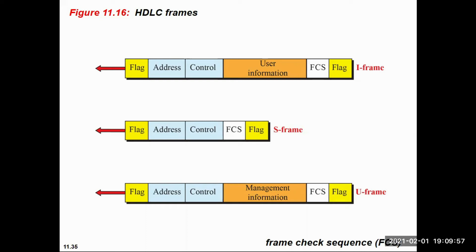After the address, the next field is control. The control field carries the sequence number of the frame, acknowledgement, request for retransmission, and other control commands and responses. The control field is also 8 bits. In the I-frame, the information field contains user data and is completely transparent; its length can be variable. Before the last flag is the FCS, or frame check sequence — a 16-bit CRC code for detecting errors in the address, control, or information fields.